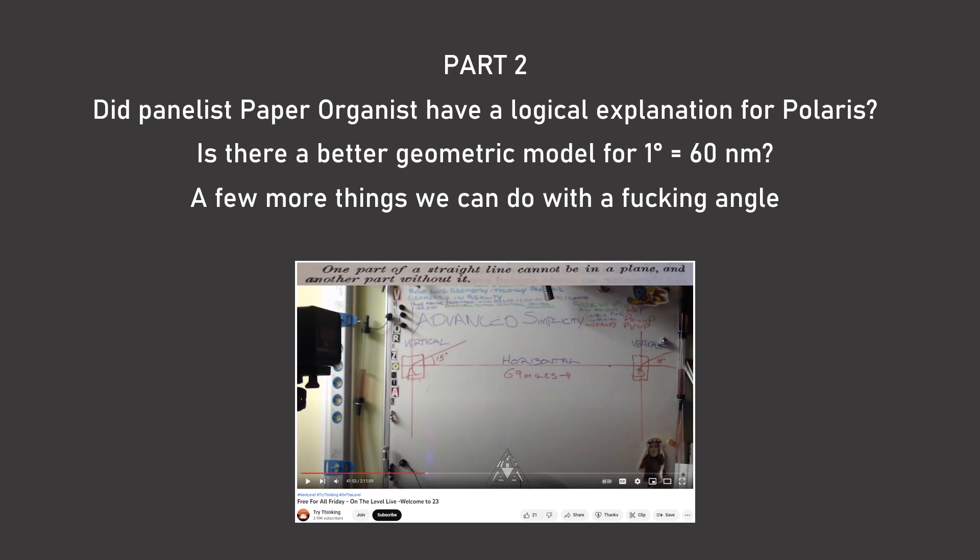So in part two, I'm going to see if panelist Paper Organist had a logical explanation for Polaris. Also, is there a better geometric model for one degree equals 60 nautical miles? And of course, I'll show a few more things that we can do with a fucking angle.